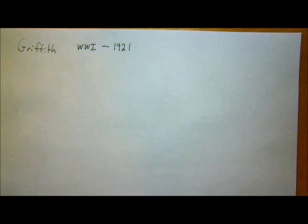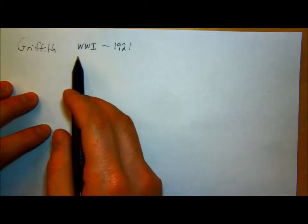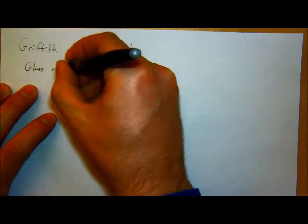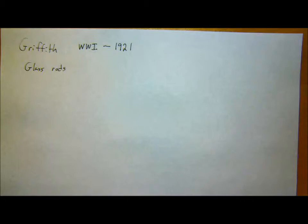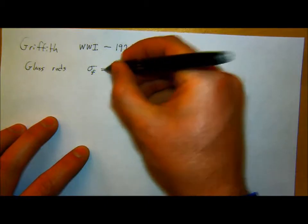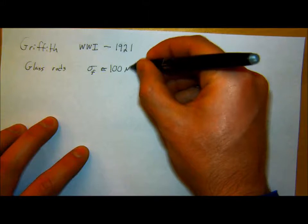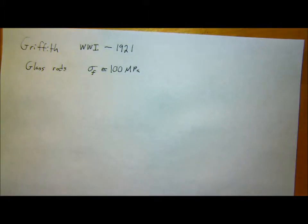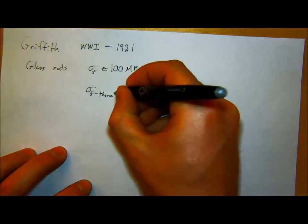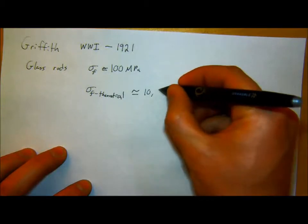Griffith, he was an aerospace engineer in World War I. Around 1921, he came out with a paper specifically talking about fracture in glass. So there was this issue, you'll notice that actually both of these examples are wartime examples, which is fun. But basically he noticed that for glass rods, the strength of these glass rods, or plates of glass that they were making stuff out of, the fracture strength was on the order of about 100 MPa.